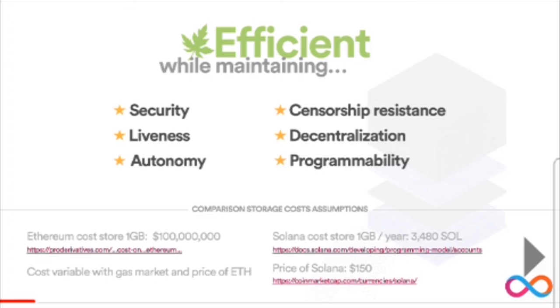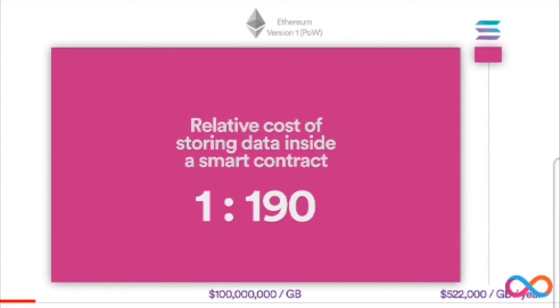In the following comparisons, we acknowledge that blockchains have different designs, but we wanted to show quite how different the costs can be. The big block on the left is the relative cost of storing a gigabyte of data on the Ethereum blockchain — that's Ethereum version one, still proof of work. It costs about a hundred million dollars. It varies; today it's about 60 million but it's been as high as 300 million dollars for a gigabyte. A hundred million dollars for a gigabyte!